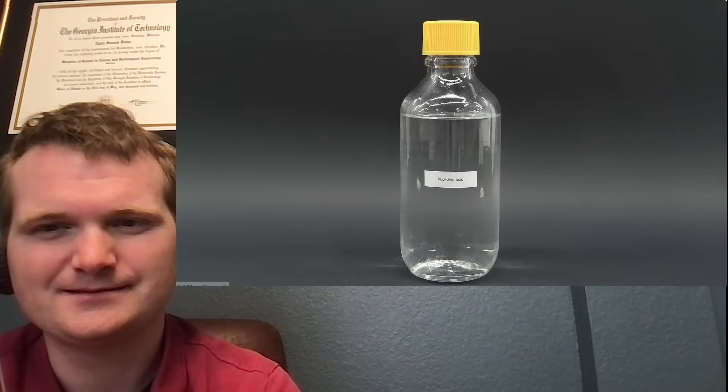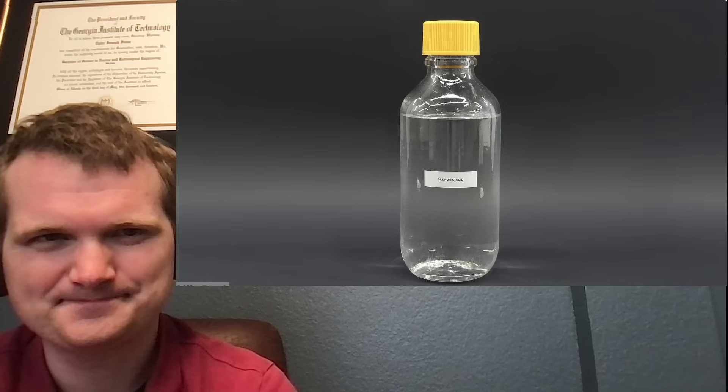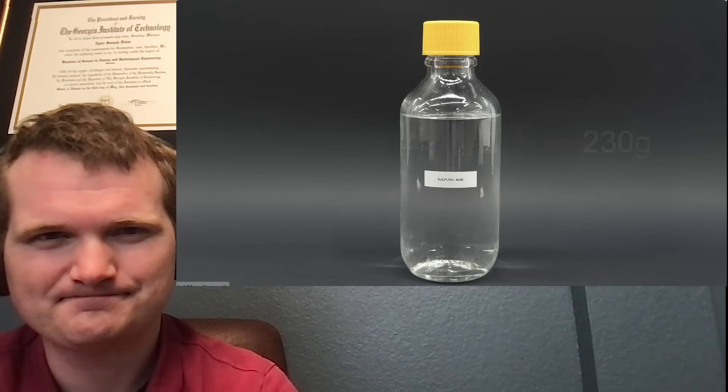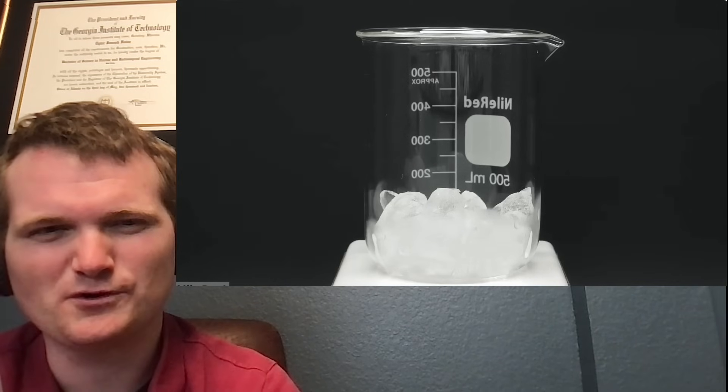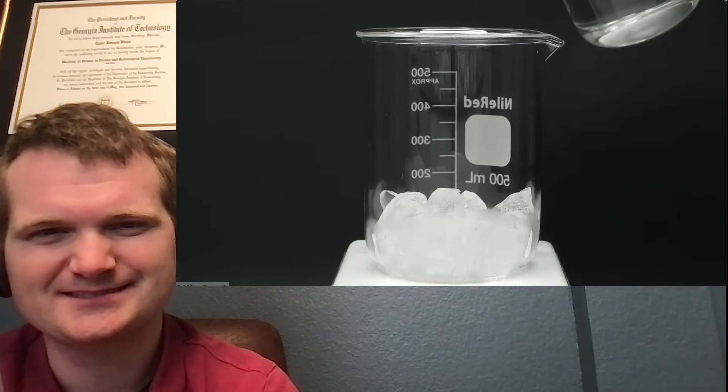Now, the next main ingredient that I needed was some 98% concentrated sulfuric acid. For all this cotton, I calculated that I needed 230 grams of it, and I poured it directly onto 70 grams of ice.